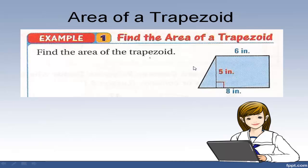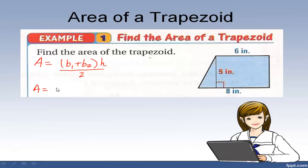Let's do an example. First thing you do: find the area. Let's write the formula for area. Area is base 1 plus base 2 times height, everything divided by 2. So I have to add my bases: 6 plus 8. I have a height of 5 inches. So I multiply by 5 and then divide by 2.